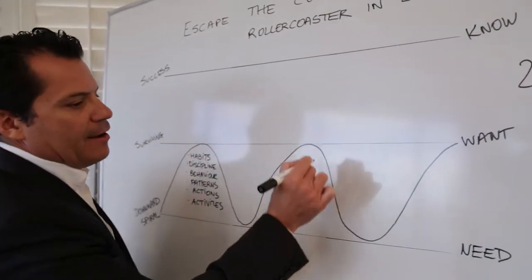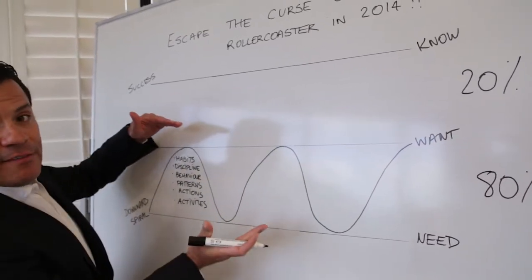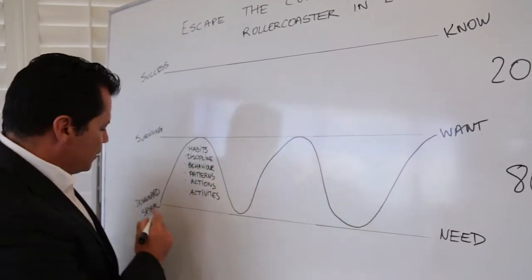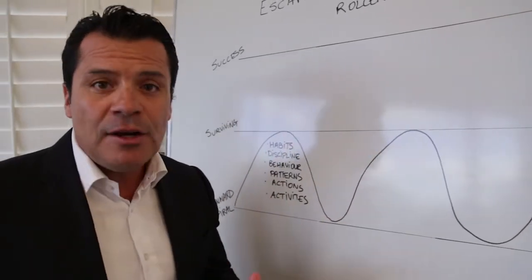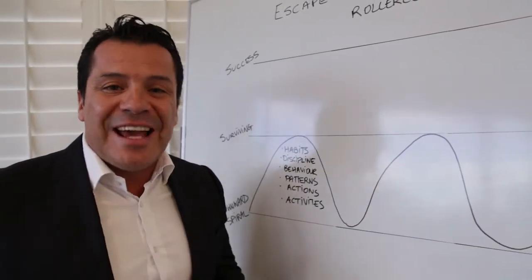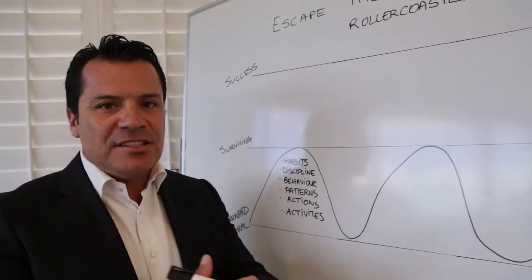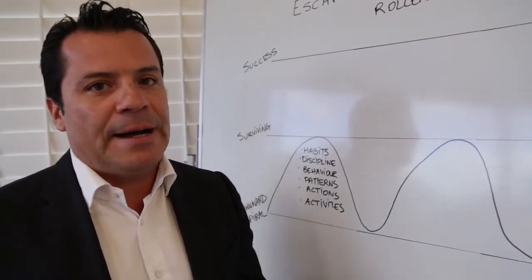So their rollercoaster looked a little bit like this: up and down, up and down, staying between surviving and downward spiral. Which means once you get to downward spiral, either two things happen. Either you go into oblivion, or there's an identity inside of you that says, this is not me, this is not who I stand for, I've got to get myself up.